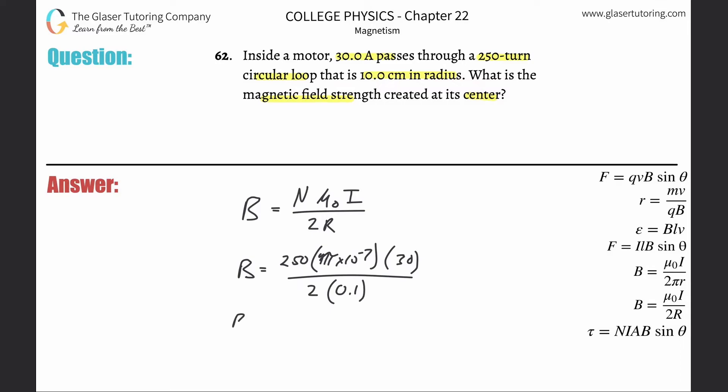Bada bing, bada boom, do a little plug and chug. It's 250 multiplied by 4π times 10 to the minus 7th times 30, divided by 2 times 0.1. It's going to work out to be about 4.71 times 10 to the minus 2 tesla.